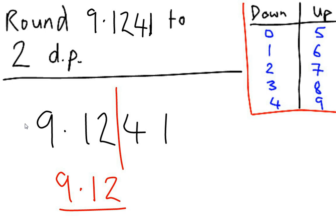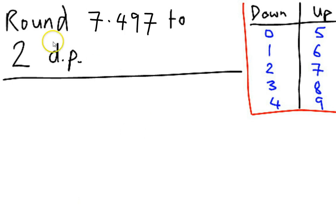We'll try one more example. The final example I'm going to run through with you is round 7.497 to 2 decimal places. So as always, we're going to write it out first: 7.497 and we want that to 2 decimal places. I'm going to put my red line. Once again, I'm going to count my 2 digits after the decimal place and put my red line down there.